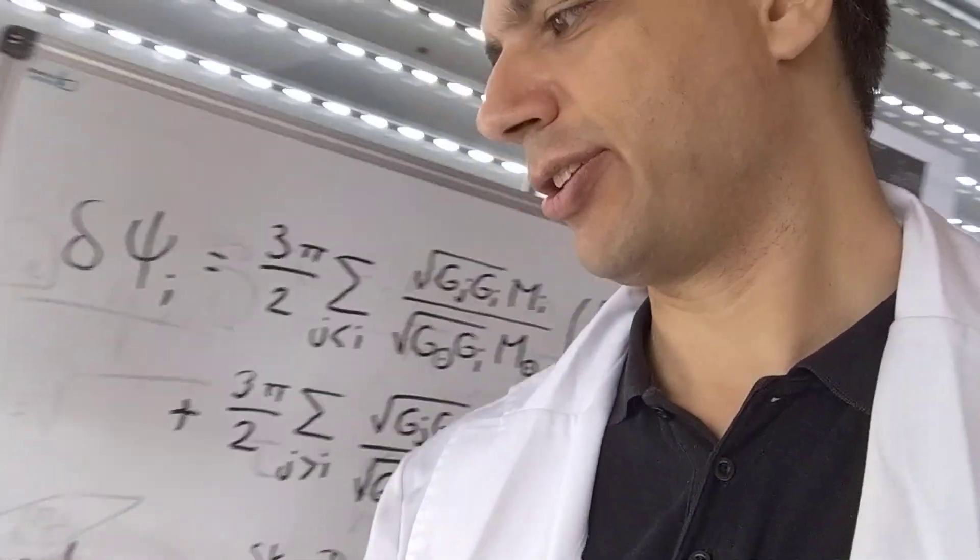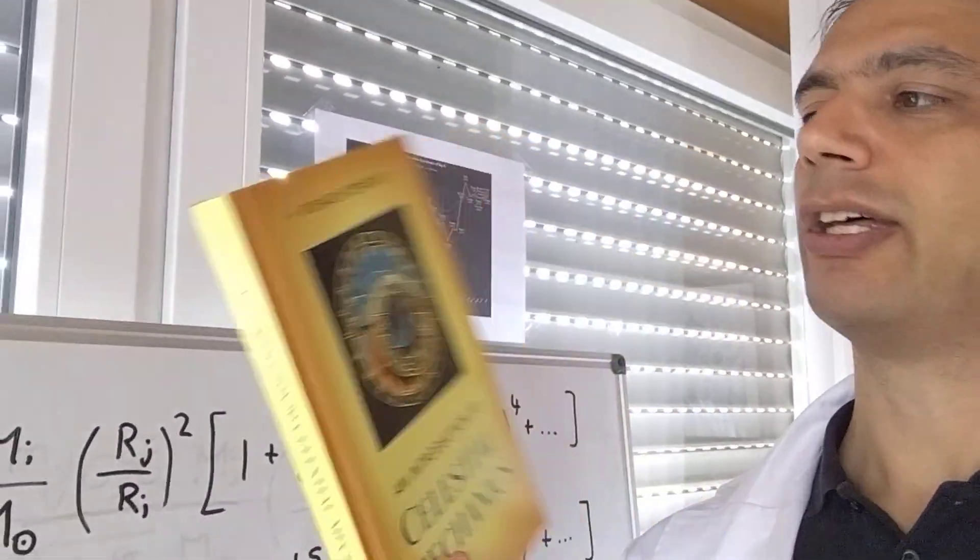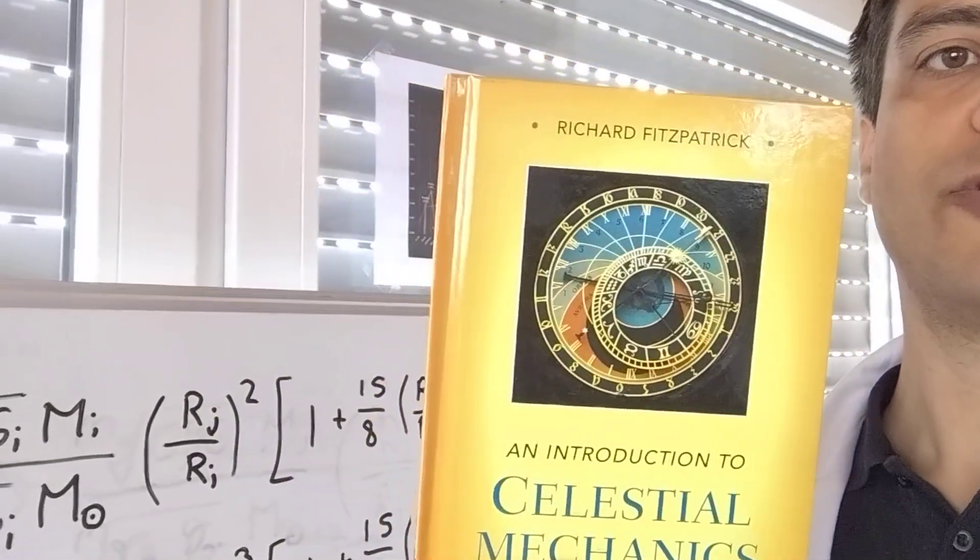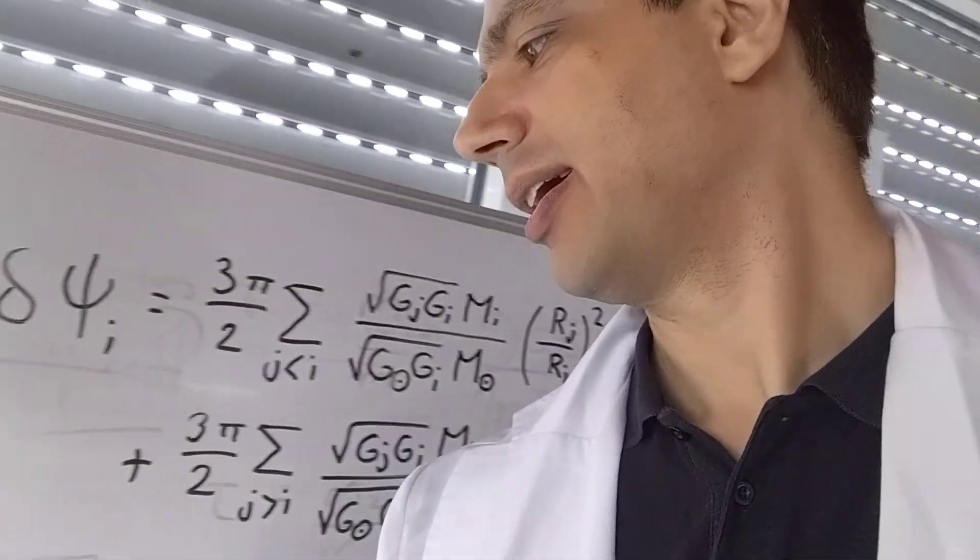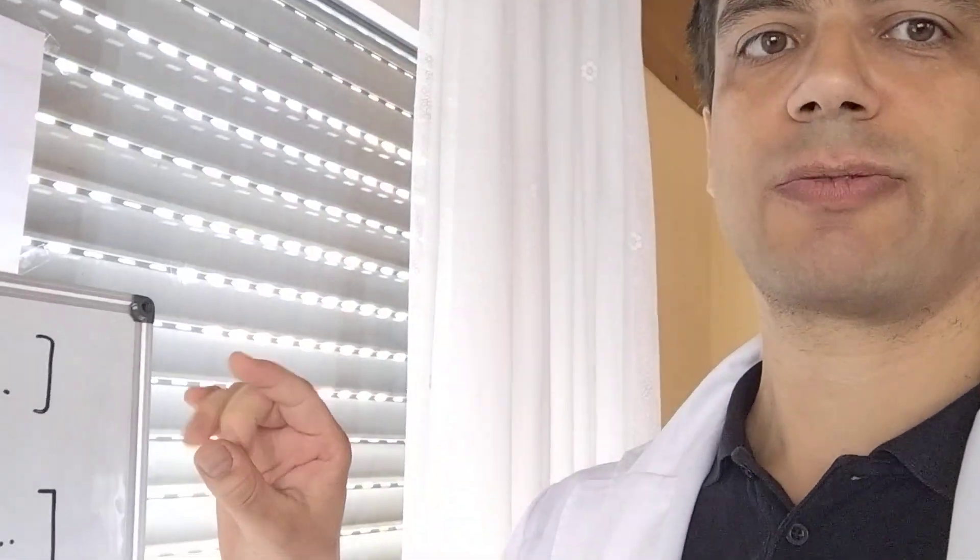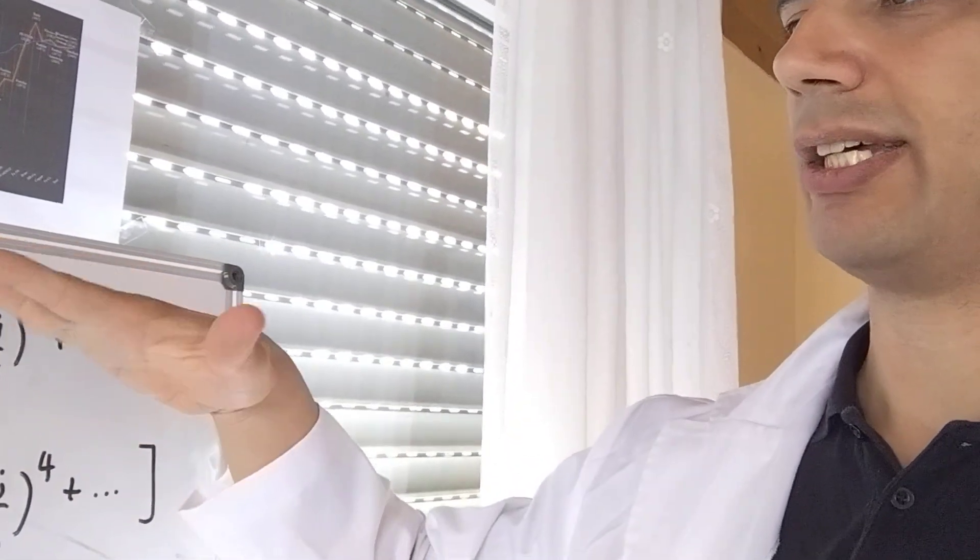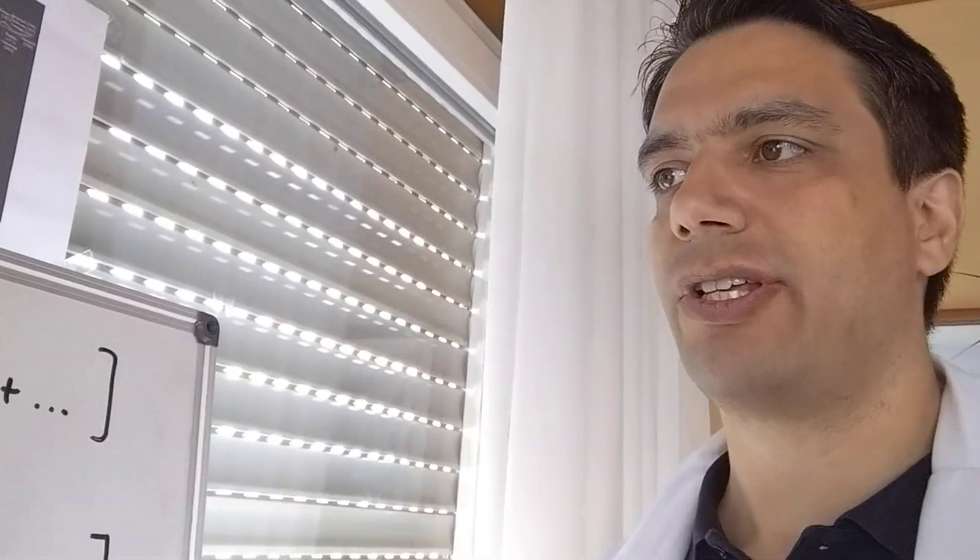And if you want to know the derivation of this equation, you can find it in Richard Fitzpatrick's book here, Celestial Mechanics. This here is the approximate equation for this. The more precise one is also looking at the eccentricity of the orbits and their inclination within the plane.